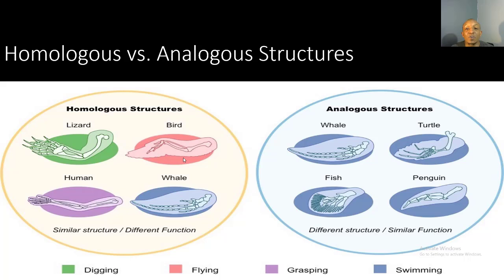Let's analyze homologous versus analogous structures. Lizards, birds, humans, and whales all have a humerus, ulna, radius, metacarpals, and phalanges in common — these are homologous structures. However, the functions differ: the lizard's structure is for digging, the bird's for flying, the human's for grasping, and the whale's for swimming. Since their structures are similar, that tells us they share a common ancestor, but their functions differ from organism to organism.